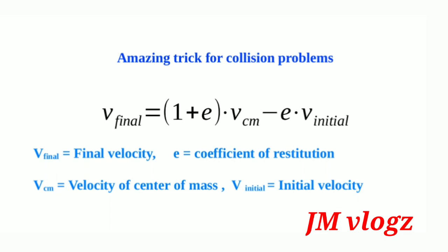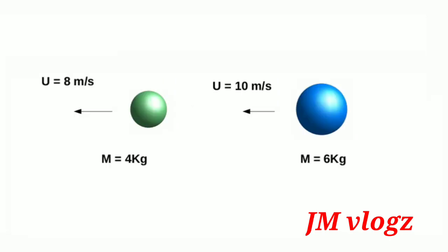I will now use this equation in a particular problem so you can easily understand the situation. Consider a collision where the first body of mass 4 kg is moving with velocity 8 m/s, and the second body of mass 6 kg is moving with velocity 10 m/s toward the first body. They collide — this is a head-on collision. We apply our equation for this particular case.